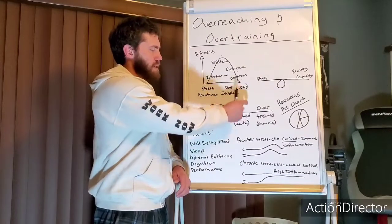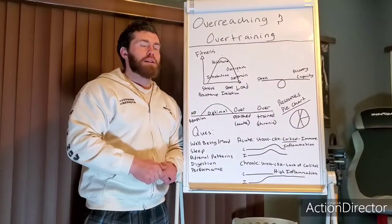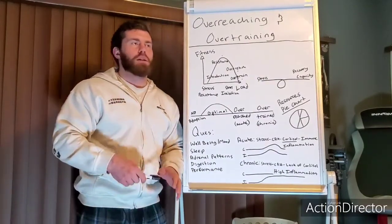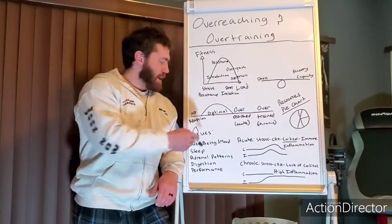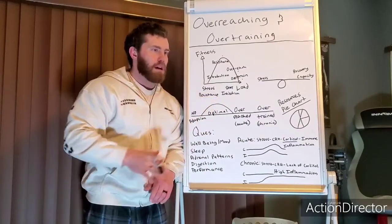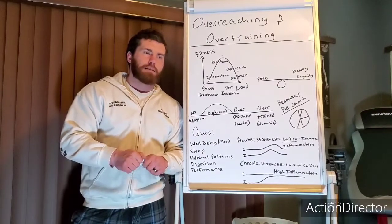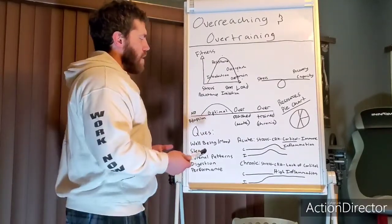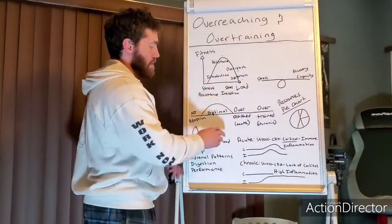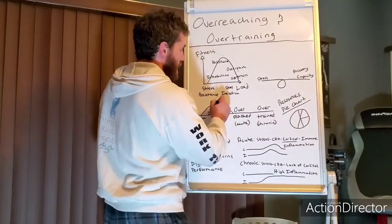One important thing to point out is that the space between these different sections is going to be different for different people — and also different depending on how advanced the person is. A beginner has a lot more area in the optimal zone because they need much less to form an adaptation. An advanced person is going to have a smaller gap between optimal and overreached.